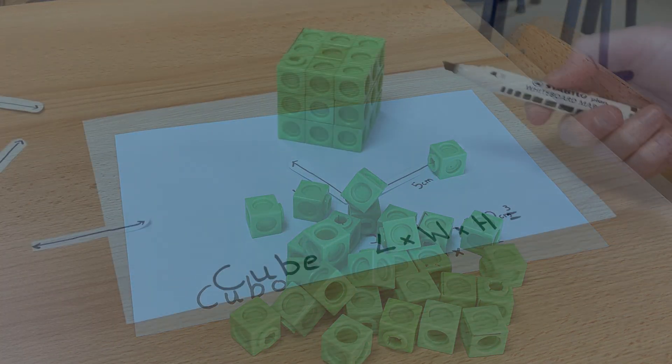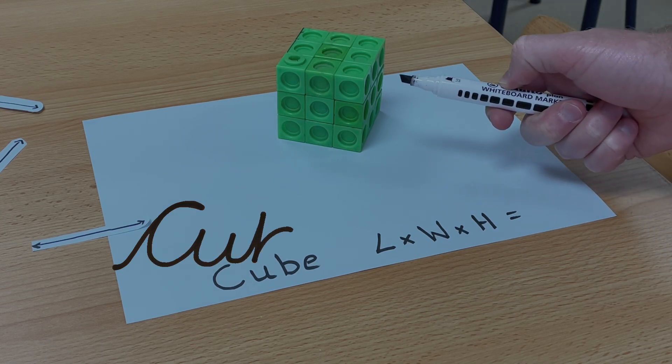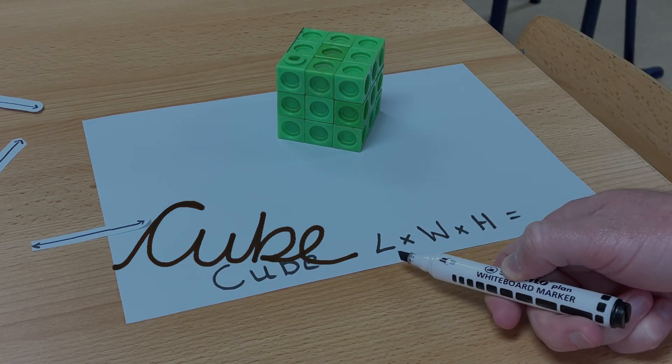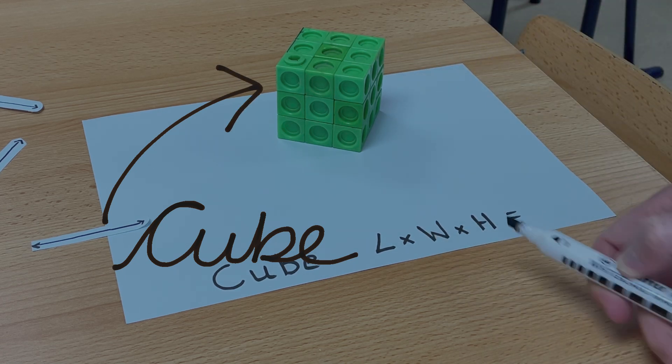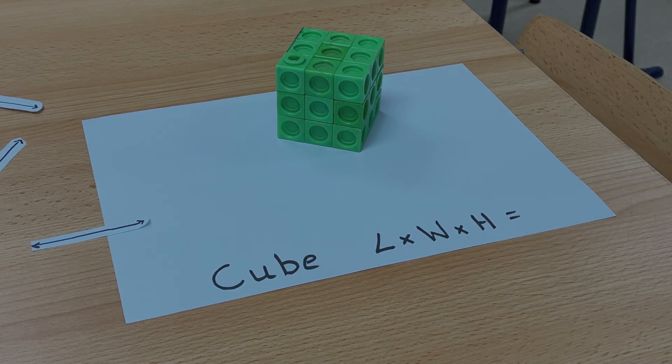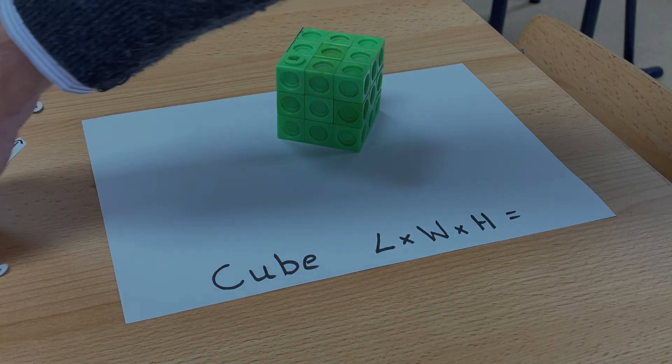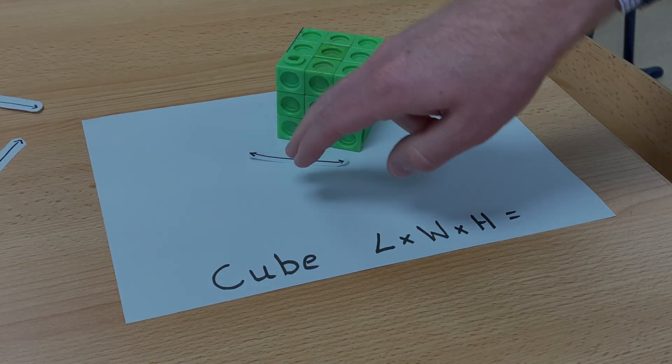So here we have a cube. And you'll be pleased to know the formula to work out the volume of a cube is exactly the same as a cuboid. So all I need to do is find the length.